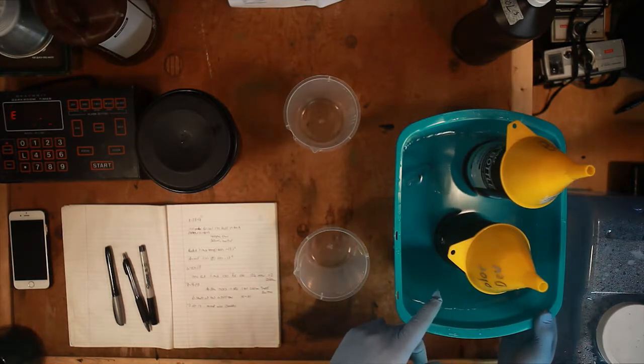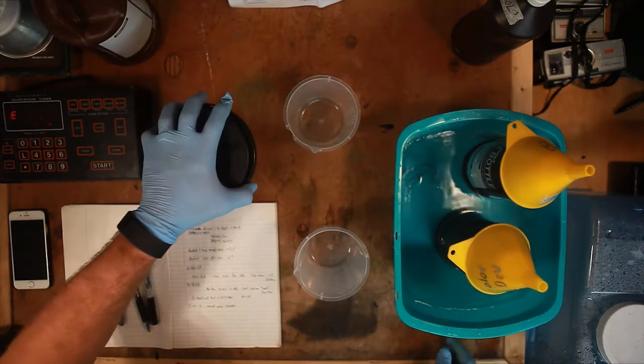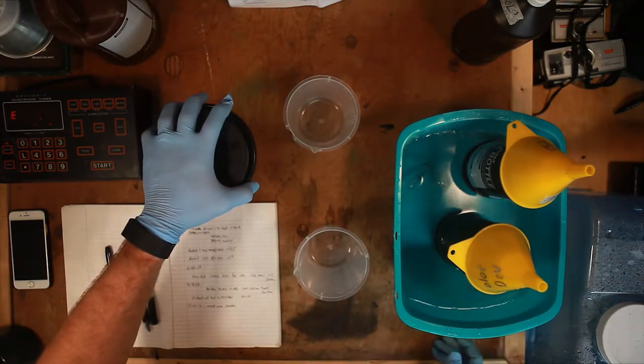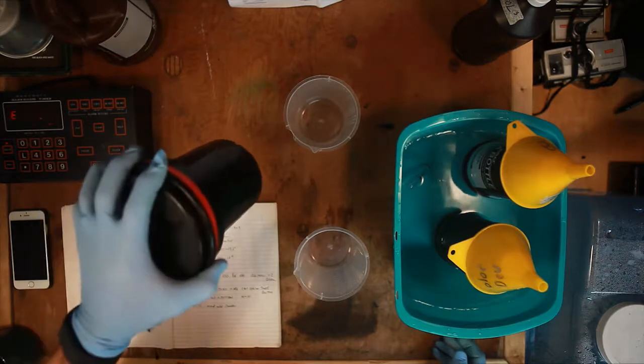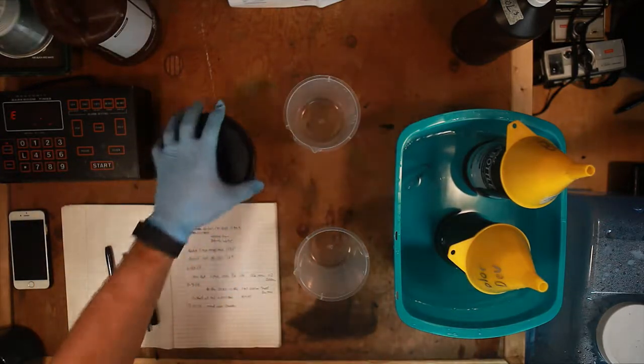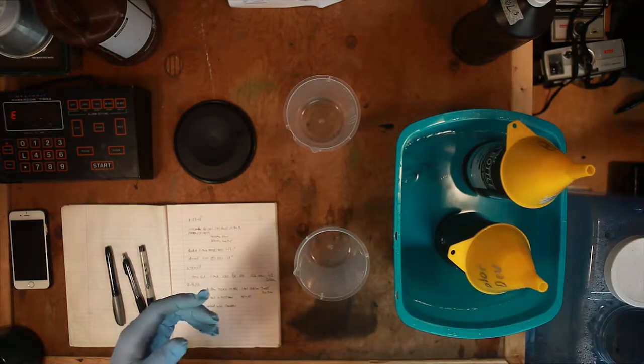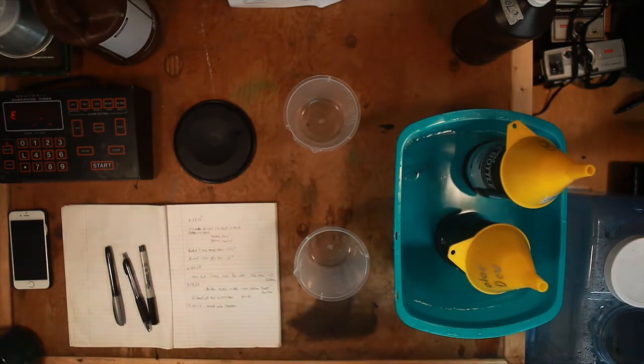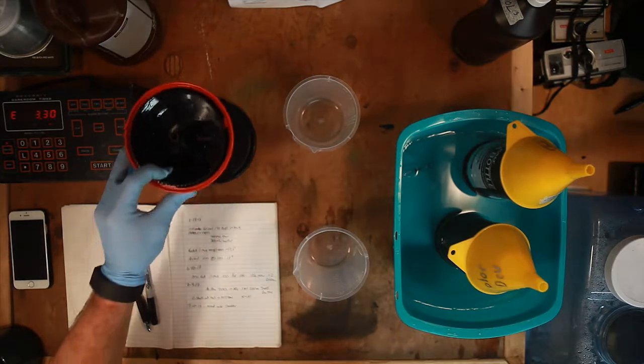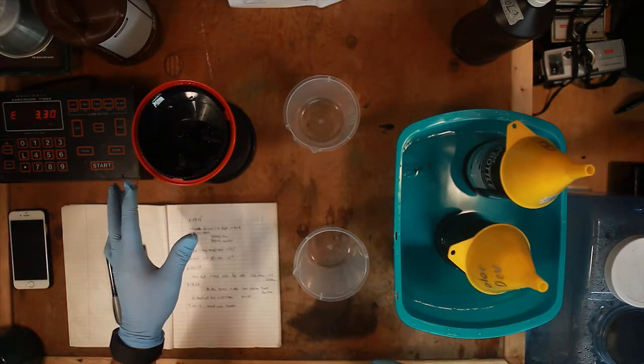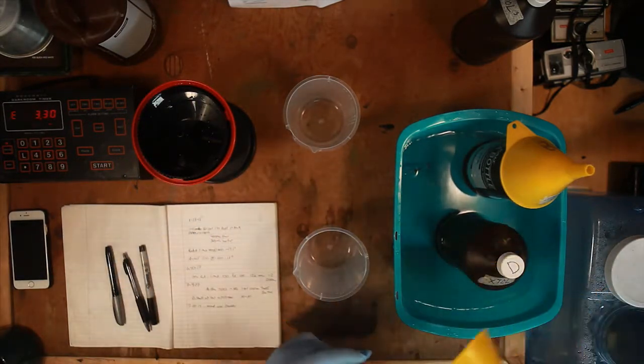We're going to start out with the color developer. Well scratch that. What we're going to do is start with a pre-soak. Over to the side here I have some water ready so we're just going to give this film a pre-soak and then we're going to move on to the color developer. We got a one minute pre-soak out of the way.